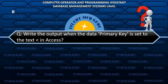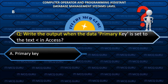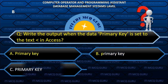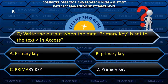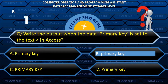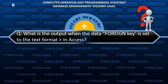Write the output when the data 'primary key' is set to the text format 'less' in Access. B. primary key.